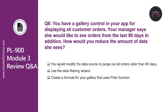Let's look at question number six. You have a gallery control in your app for displaying all customer orders. Your manager says she would like to see orders from the last 90 days only. How would you reduce the amount of data she sees? Is it by creating a formula for your gallery that uses the filter function? No. Would you modify the data source to purge out all orders older than 90 days? Definitely not. The correct answer is using the data filtering wizard. The filter function allows you to apply logic tests to one or more columns in your data source. For this scenario, you could filter out data where the order date is less than 90 days ago.